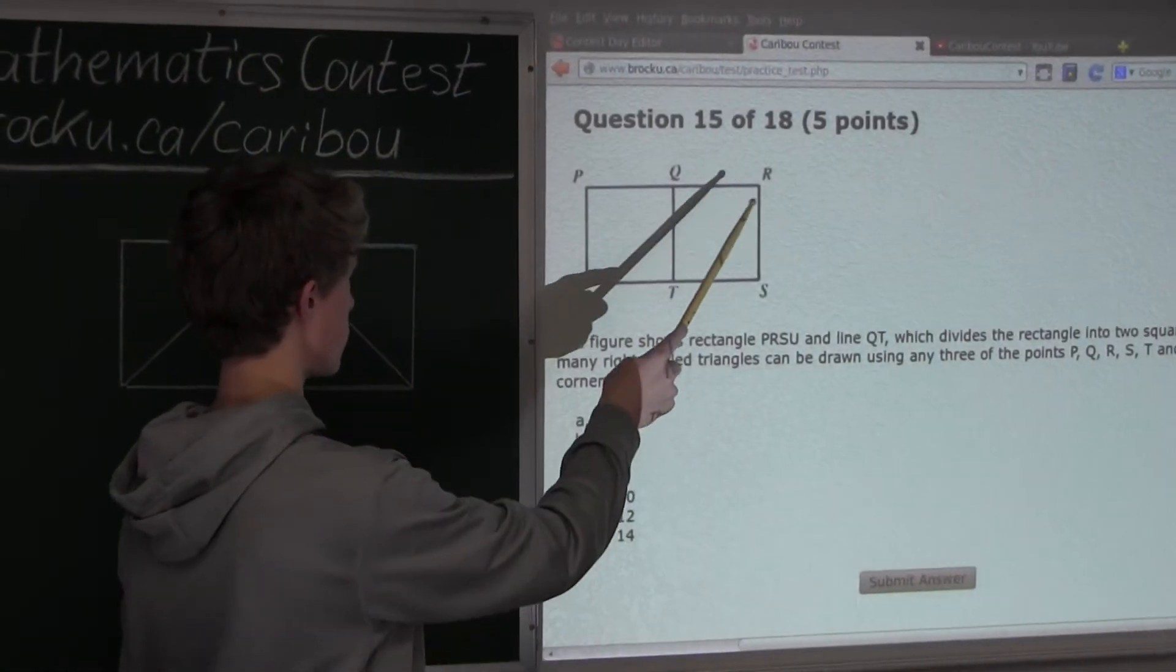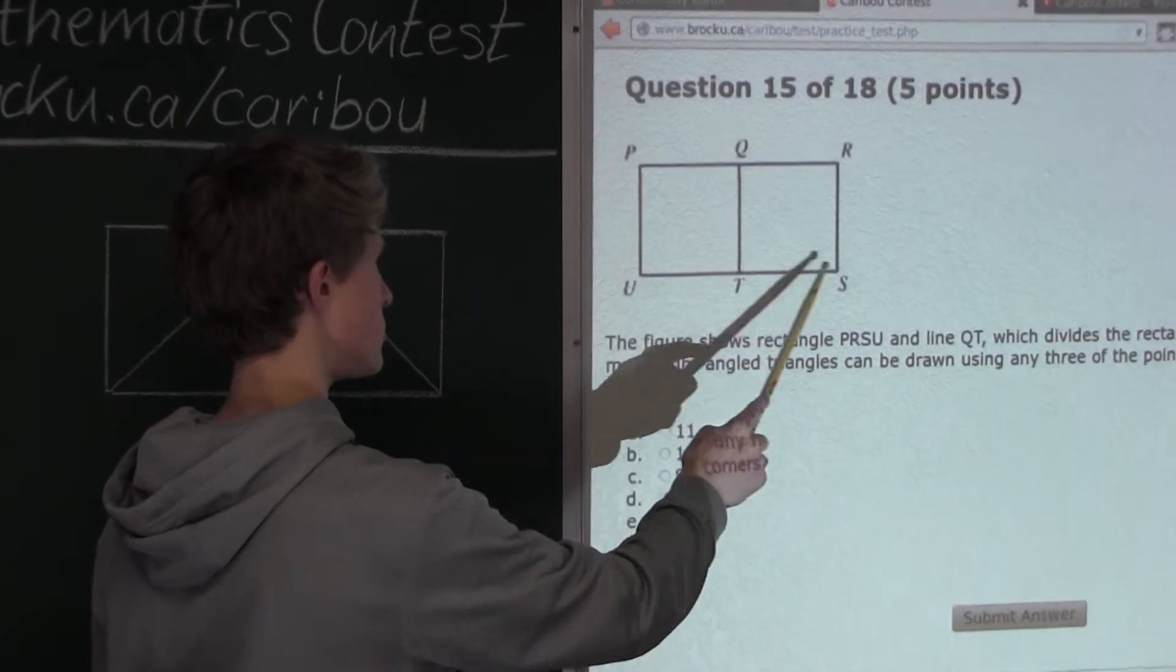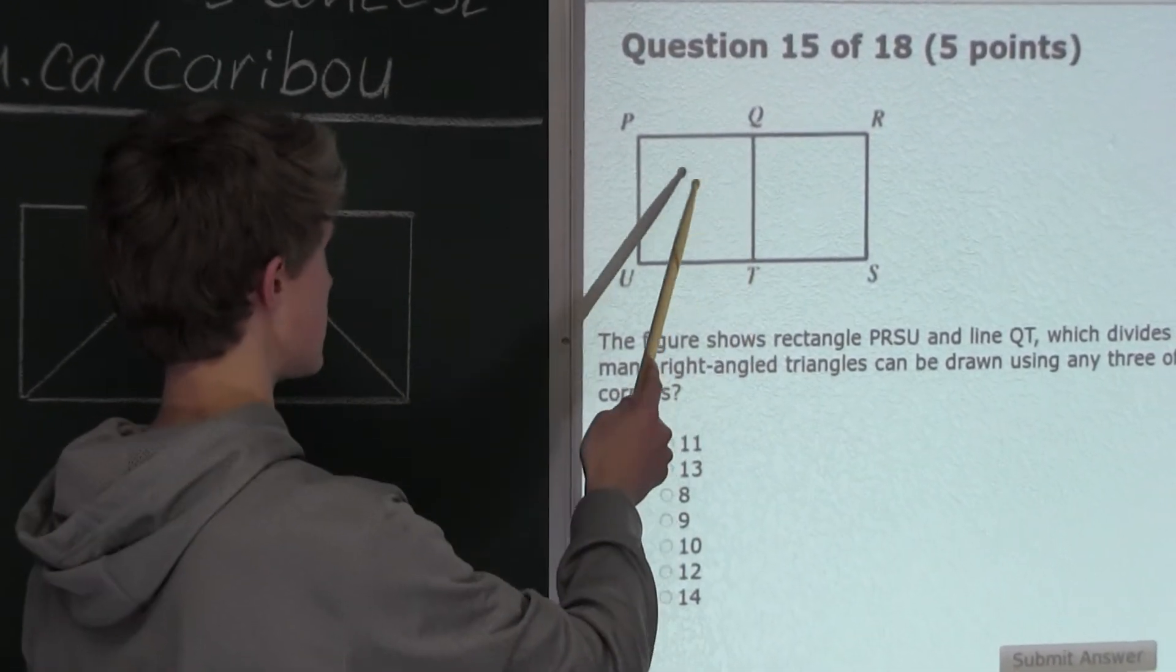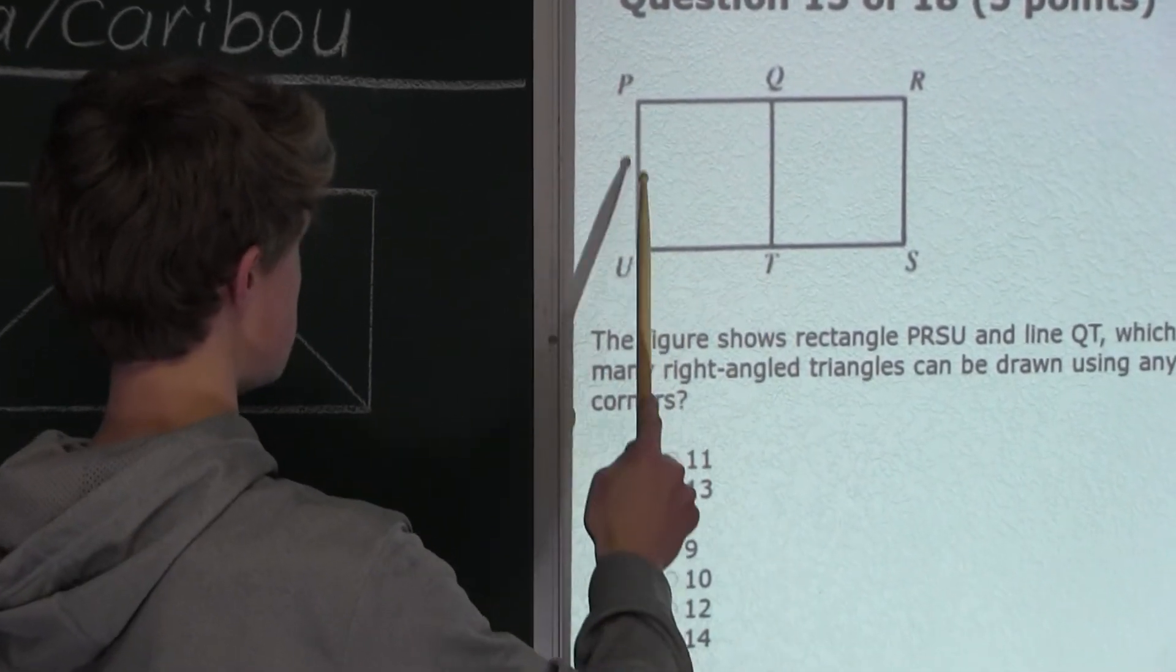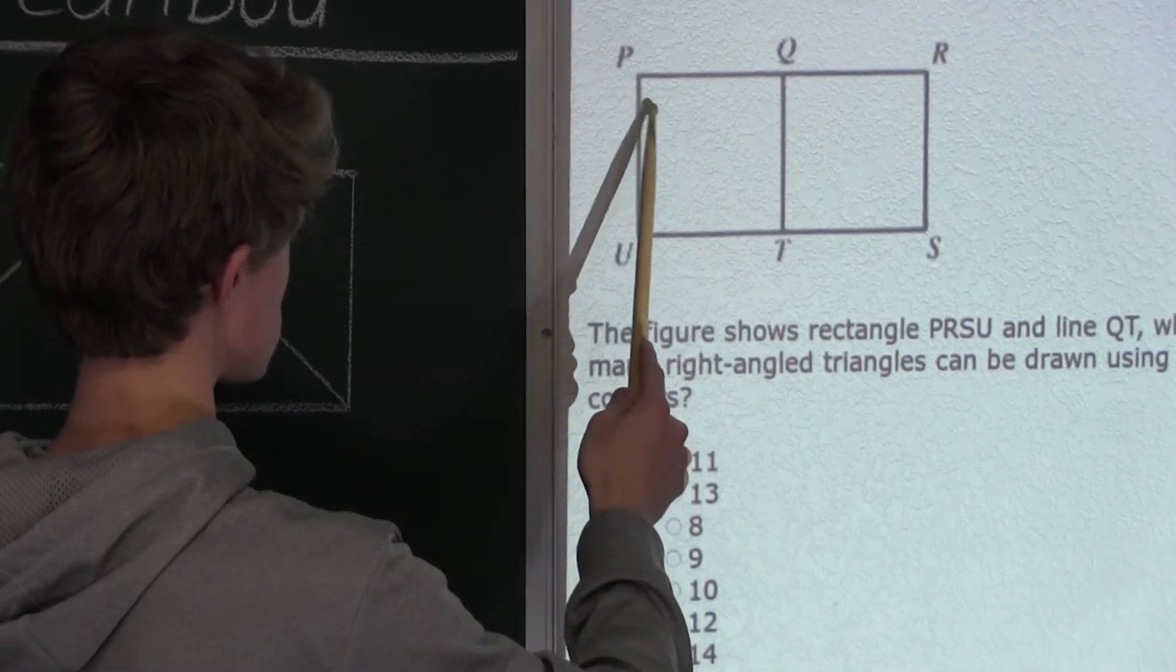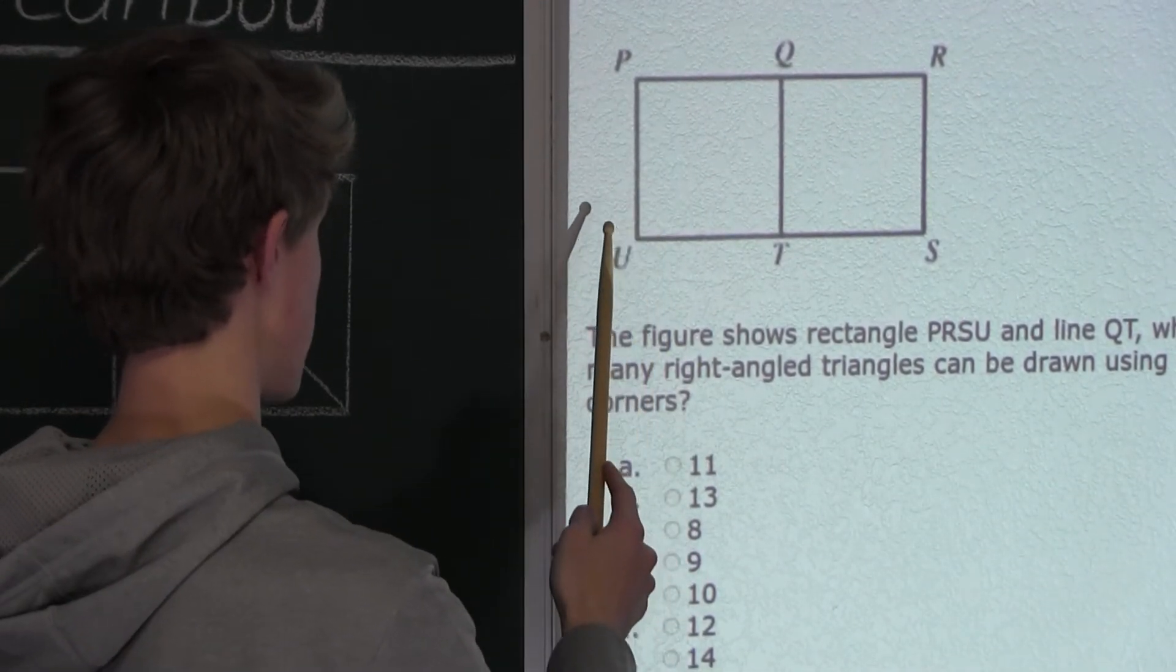So now let's look at the whole rectangle P, U, S, R, which we know again has four corners, P, U, S, R. And in each corner there is a right angle.